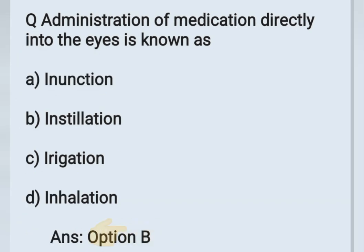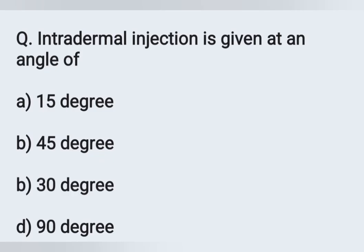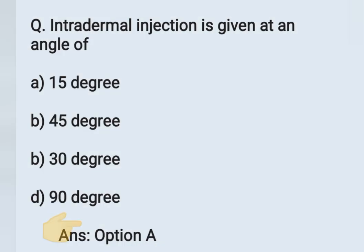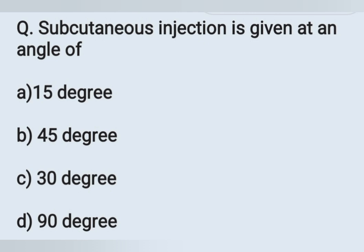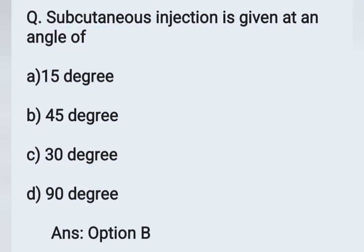The next question: intradermal injection is given at an angle of. Options: A - 15 degrees, B - 45 degrees, C - 30 degrees, D - 90 degrees. Subcutaneous injection, also known as hypodermic injection — for example, insulin injection — is given at a 45-degree angle. Option B is correct for subcutaneous. Intradermal injections are given at 10 to 15 degrees, and intramuscular injections are given at a 90-degree angle. So: intradermal 10–15°, subcutaneous 45°, intramuscular 90°.